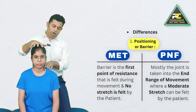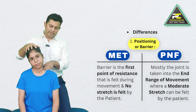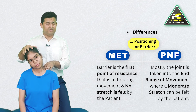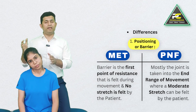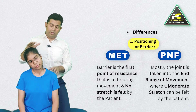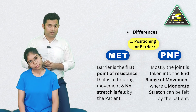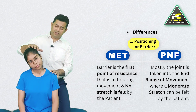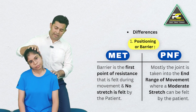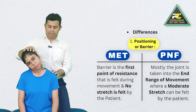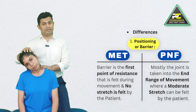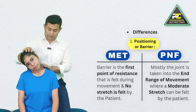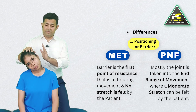In the MET concept, the barrier is the first sign of resistance felt — a very comfortable position for the patient where an actual stretch is not being felt. In contrast, in PNF hold-relax, the therapist takes the head and neck passively into the maximum passively available range of motion, where the patient experiences a moderate amount of stretch or discomfort.